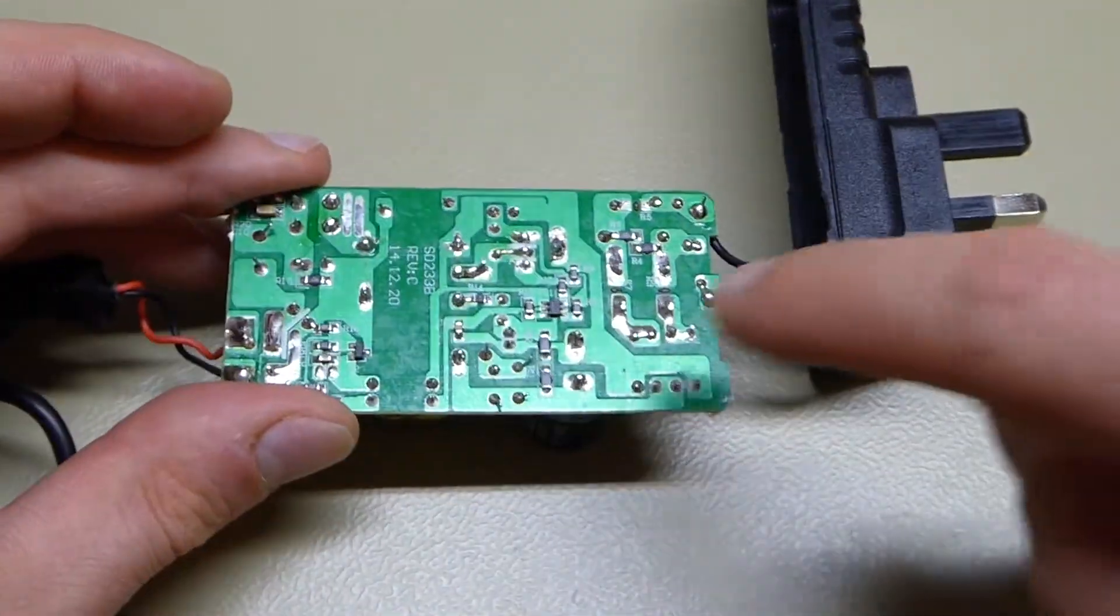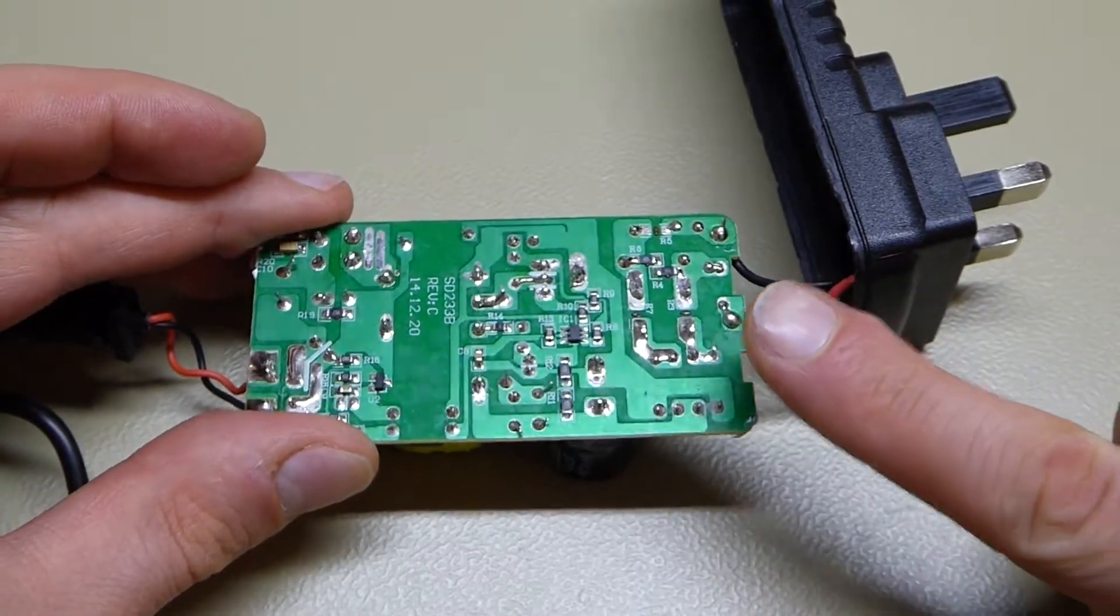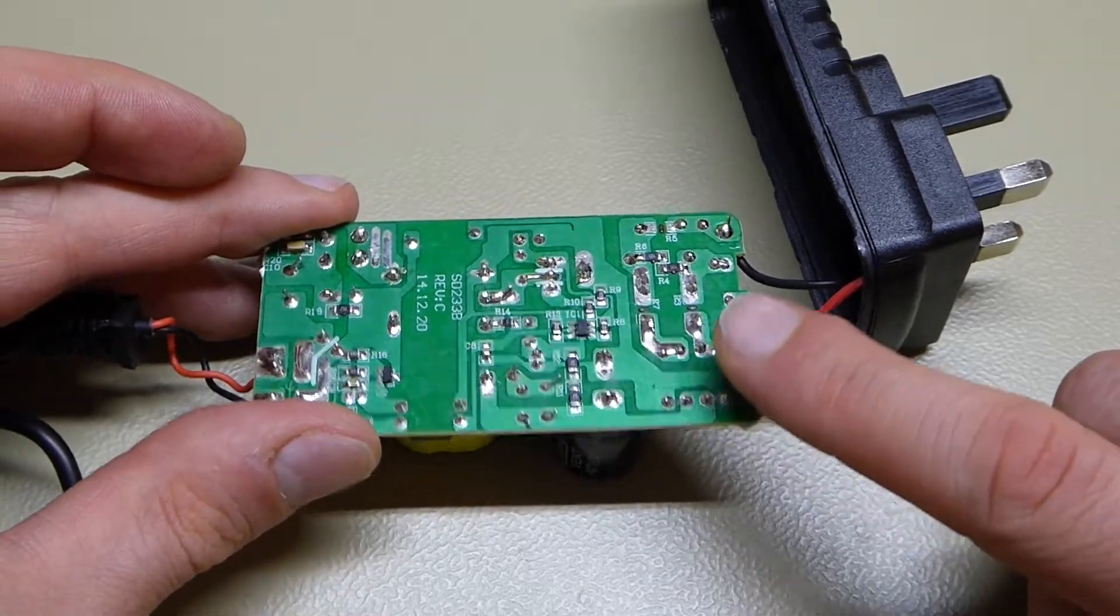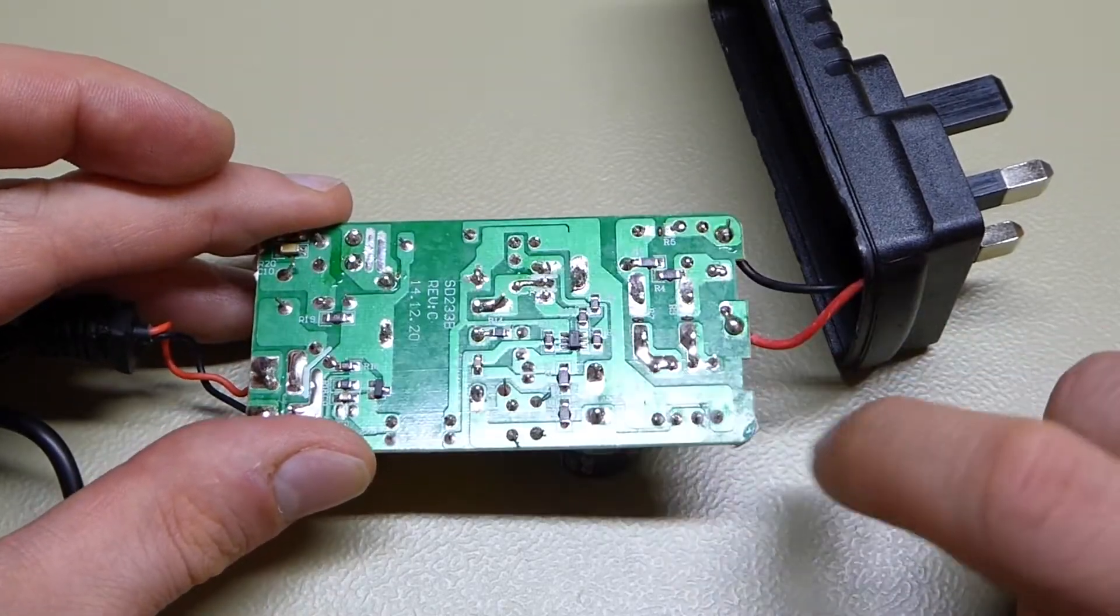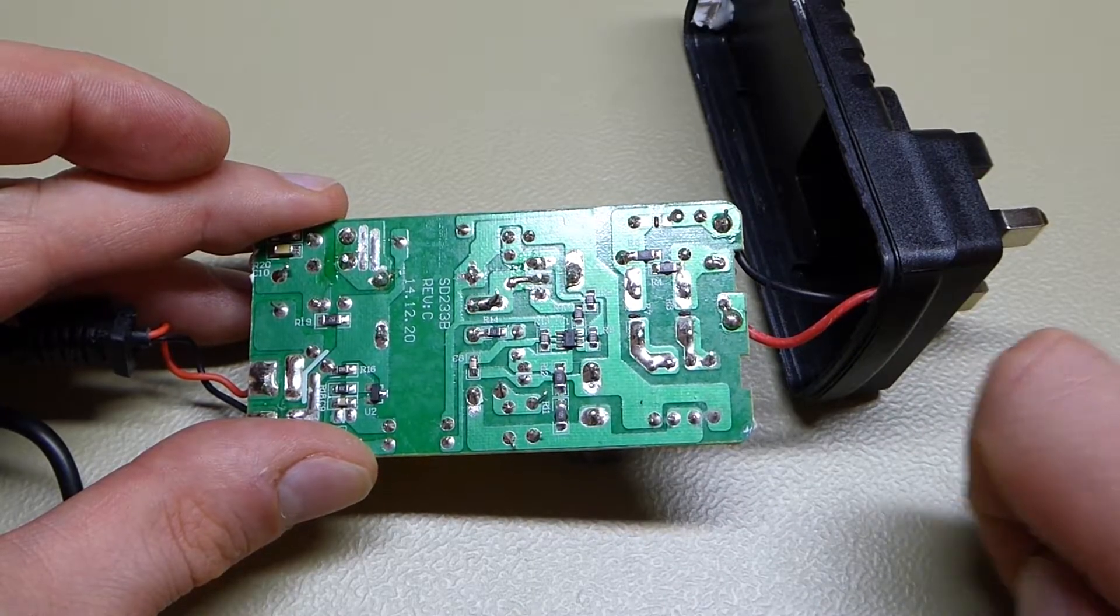So what I would like to do is just desolder the choke and see what's going on. Because if it's just one of the windings, I would have said maybe there's a bad solder joint or one of the wires has come off. But for both of them to be faulty is really strange. So let's look at it a bit closer.